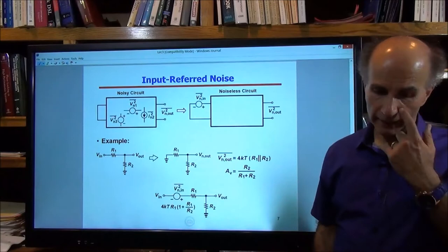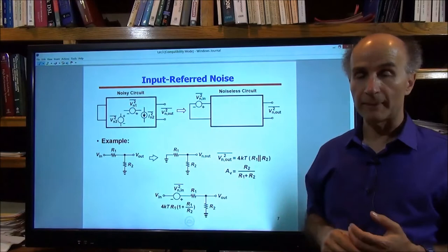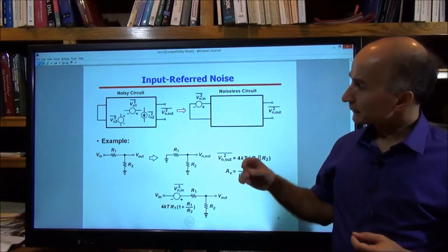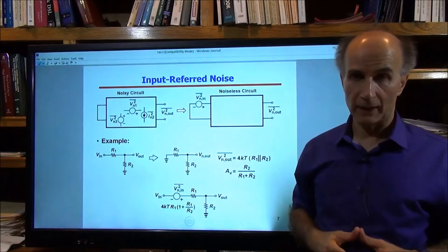Instead of looking at noise and signal at the output, we can look at the signal and noise at the input of the circuit. That brings us to what we call input-referred noise. Input-referred noise means: take the output noise and divide it by the gain from the main input to the output (or divide by the gain squared if working with power spectral densities). Our objective is to represent the noisy circuit as a noiseless circuit with a noise source at the input instead of the output.